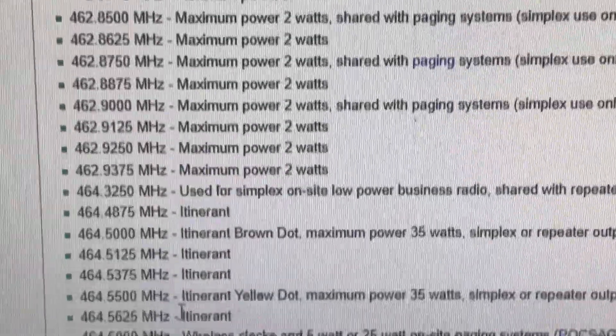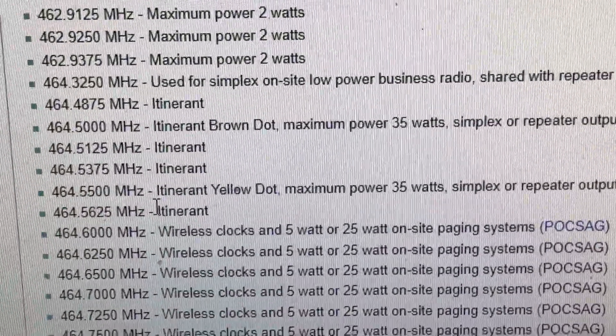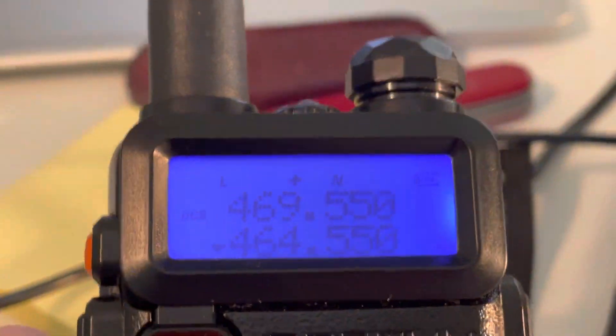Brown dot and yellow dot. Now, the inputs for these four pairs are the standard - it's the standard 5MHz offset for UHF.